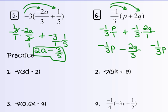You can leave the q in the numerator or put it after the fraction negative 2 thirds — either way it's the same answer.